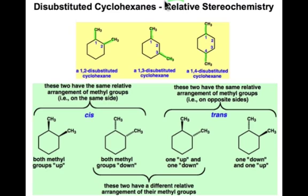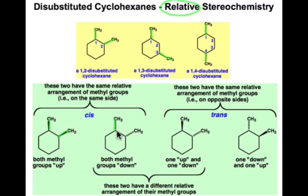We also have a more subtle aspect that deals with relative stereochemistry — how the stereochemistry at one bond relates to that at the other. For example, they could have the same relative stereochemistry, meaning both are up or both are down, or they could have different relative stereochemistry, where one is up and one is down.